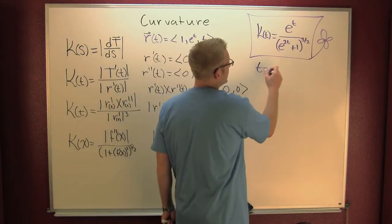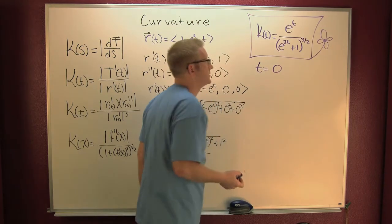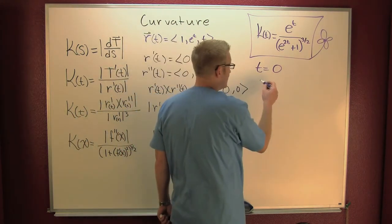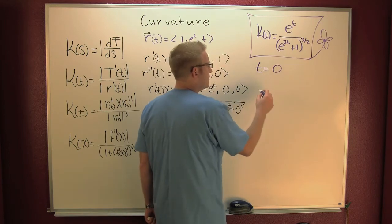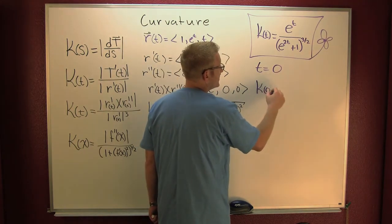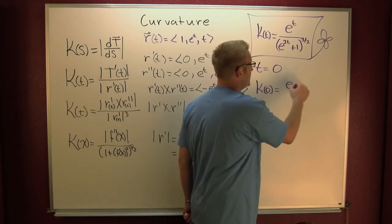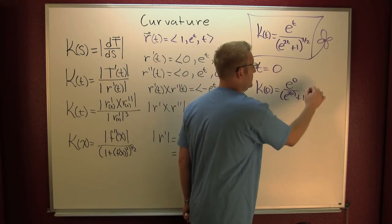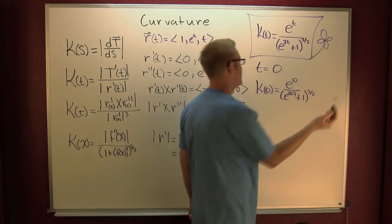What if t was? I don't know. Zero's nice. So then my curvature at my parameter being zero. Call it time. At time zero. Where does this thing start? So the curvature is zero. This is e to the zero over e to the two times zero plus one to the three halves.